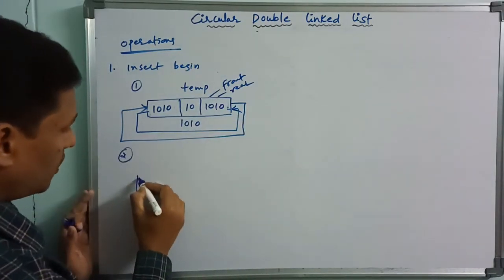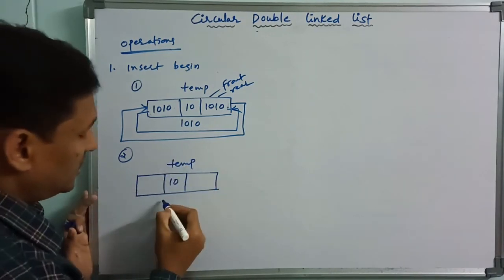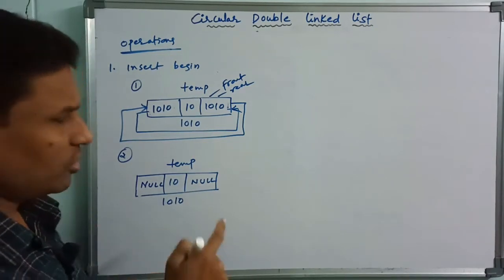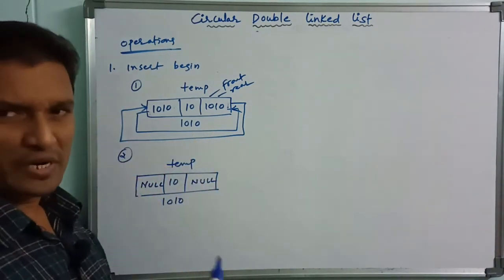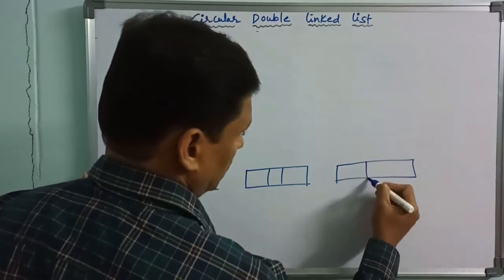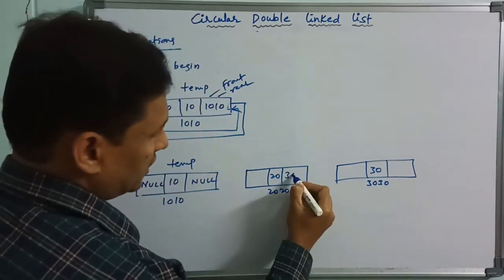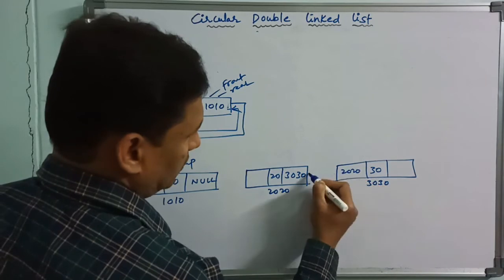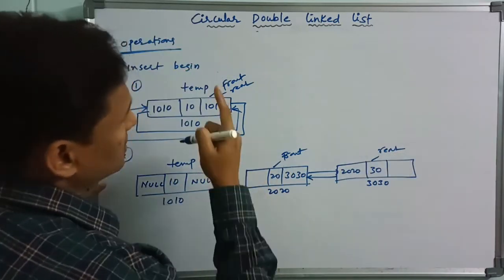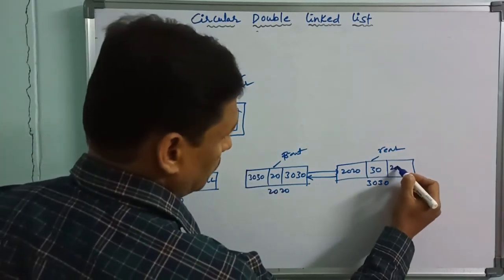Second case: if there is already one element, we have a temporary element. For example, we add elements 20 and 30. We update the previous and next links — front and rear are updated accordingly to maintain the circular connection.